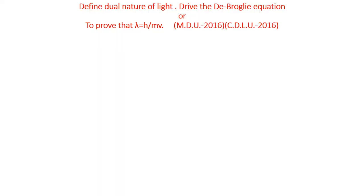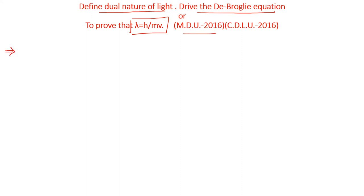The question is: define the dual nature of light and derive the de Broglie equation. The dual nature is explained to you, or the question asks you to derive the de Broglie equation — which means prove that lambda is equal to h by mv. This question is from MDU 2016 and CGLU 2016. The de Broglie equation is: lambda is equal to h by mv.